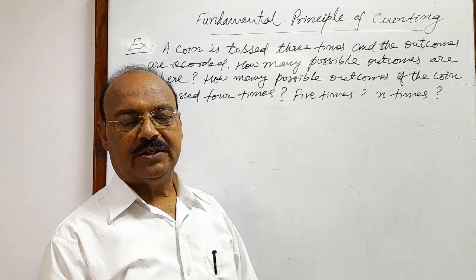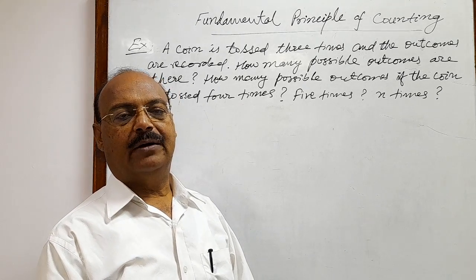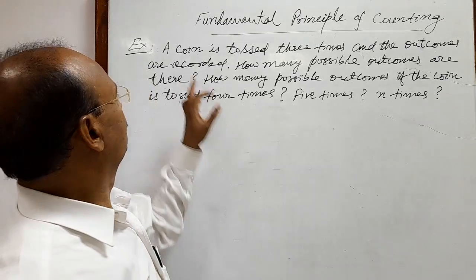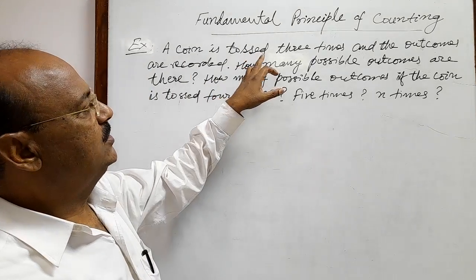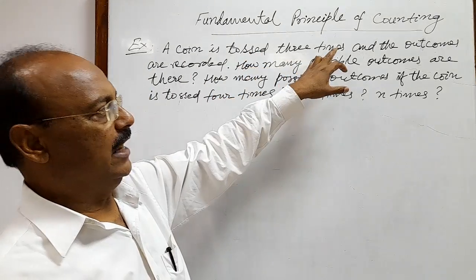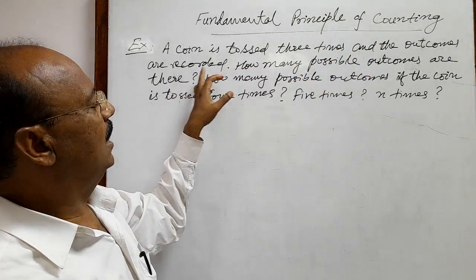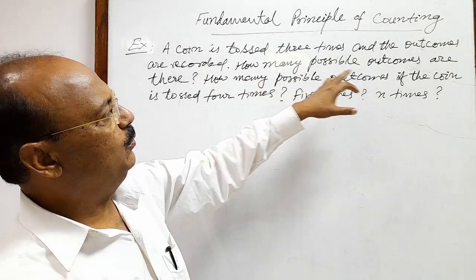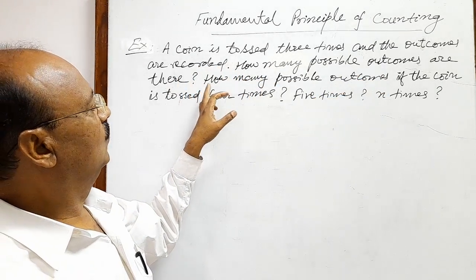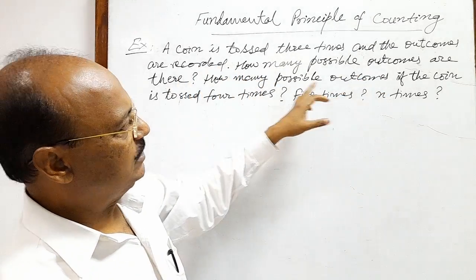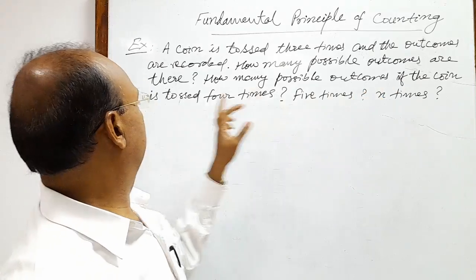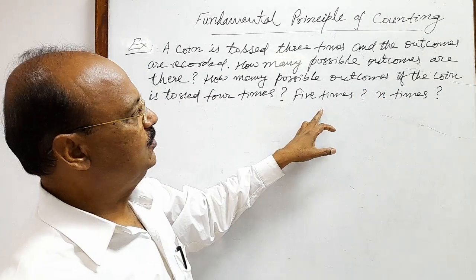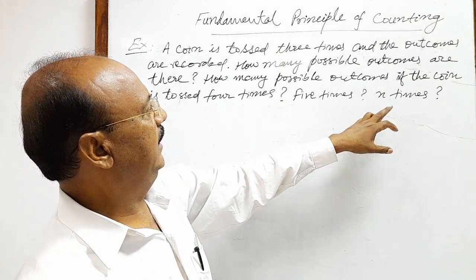Here we are going to discuss a question from the topic fundamental principle of counting. The question is: a coin is tossed three times and the outcomes are recorded. How many possible outcomes are there? How many possible outcomes if the coin is tossed four times, five times, or n times?